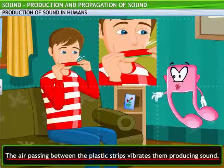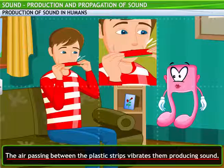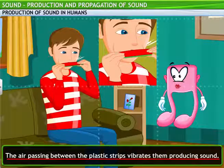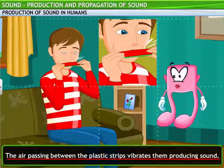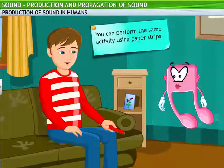Hey, it sounds like a whistle. Can you figure out how this sound is produced? It was the air that you blew between the strips. It made them vibrate, and the vibration produced the whistling sound. This is exactly how your larynx or the voice box produces sound.